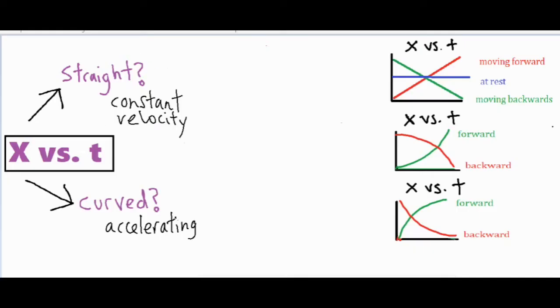Let's focus on this top portion. If you have anything straight, don't get straight confused with the word flat. This blue line is flat but all three of these are straight. Now the next question you want to ask yourself is what kind of slope does it have.